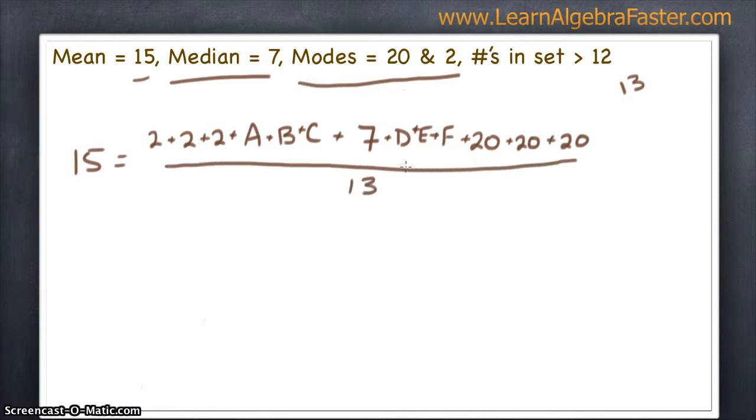To try to get all these unknowns by themselves, we need to do inverse operations. So, we'll multiply each side by 13. That cancels. 13 times 15 is 195.